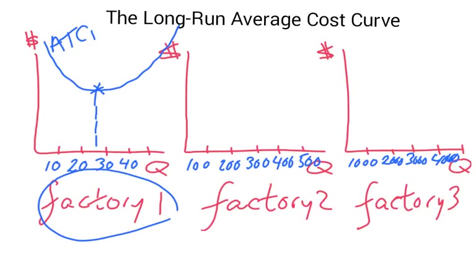So let's say, for example, that for factory two, the average total cost curve looks like that. Let's call it ATC2.